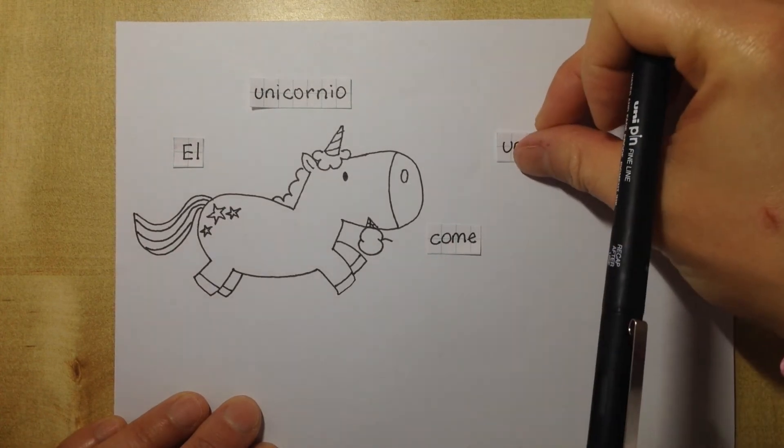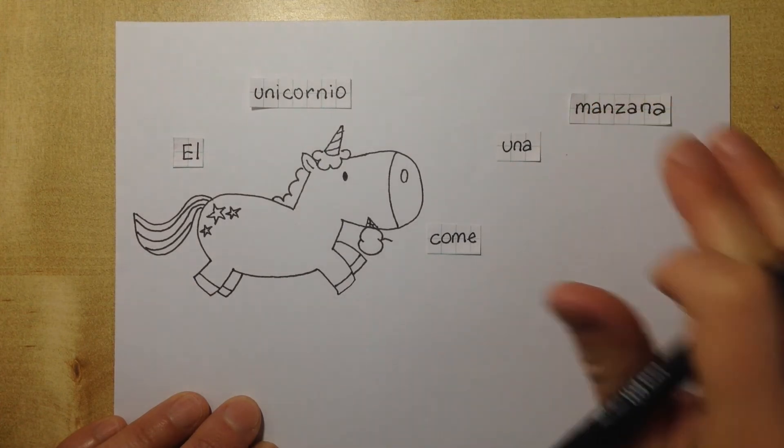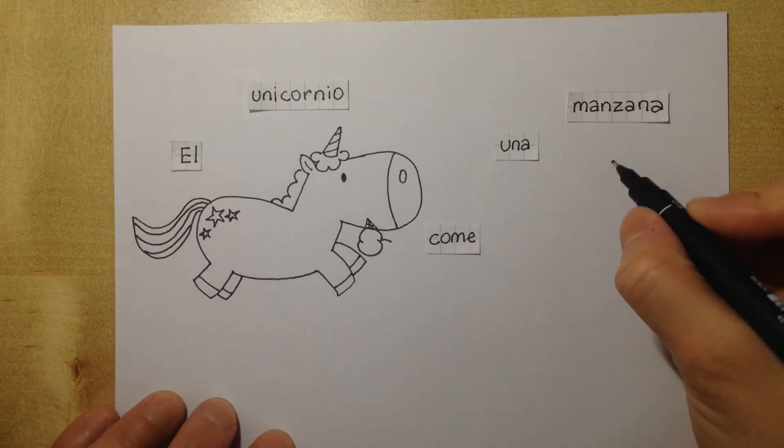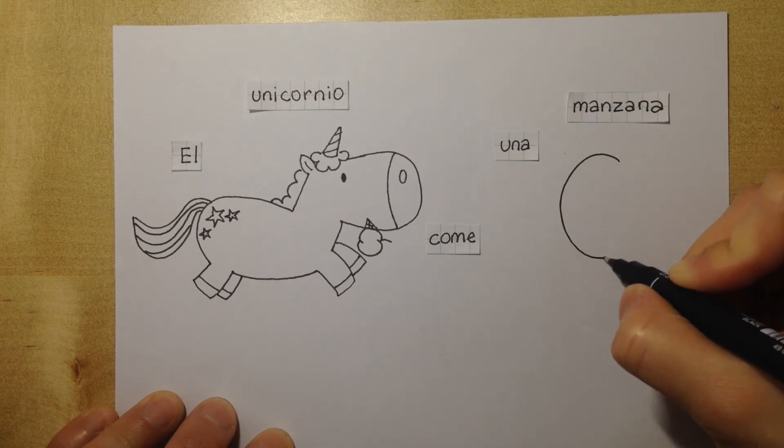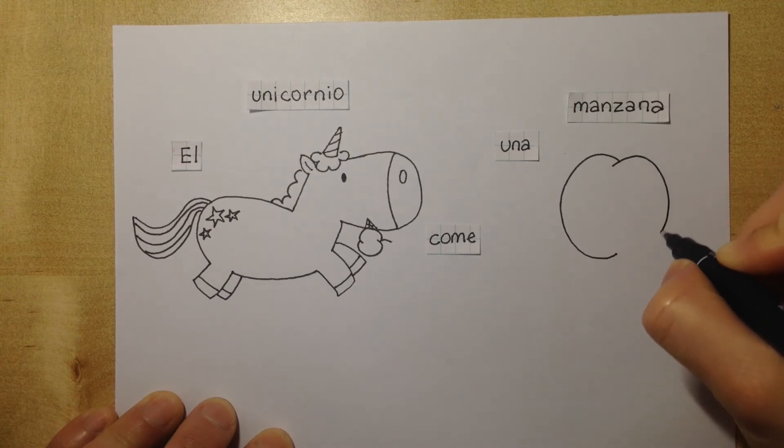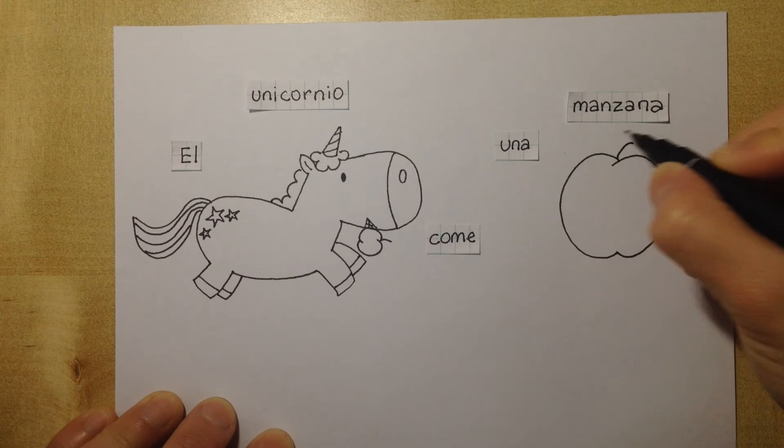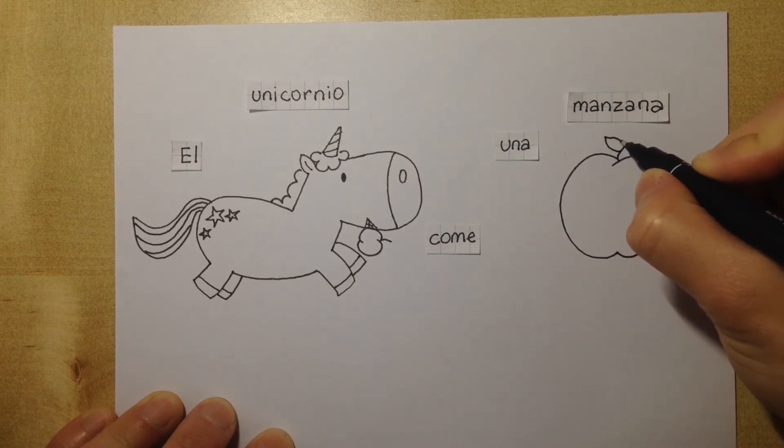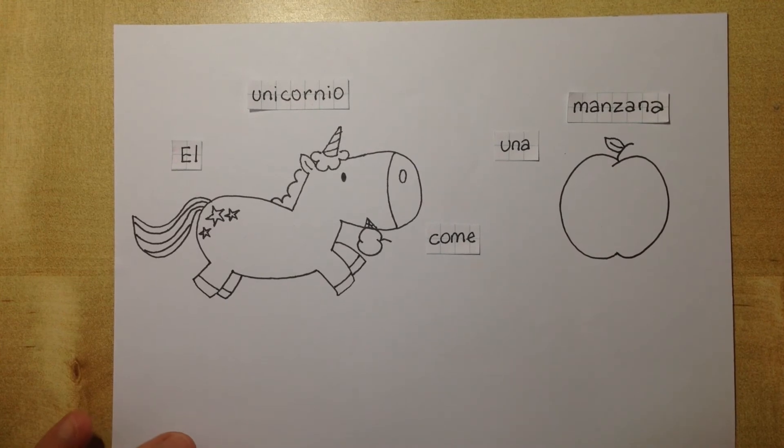Una, that means an or one. Manzana, apple. El unicornio come una manzana, the unicorn eats an apple. In this case manzana is feminine, that's why it's una with A at the end, and manzana with A as well at the end.